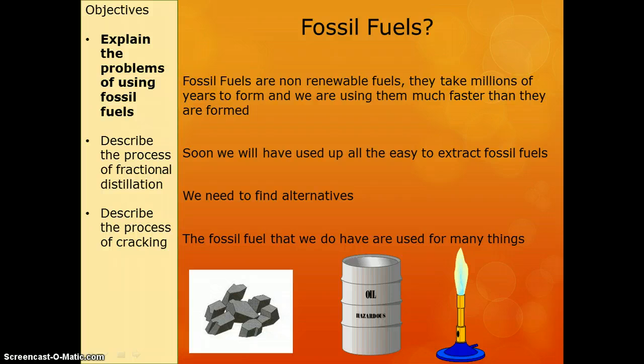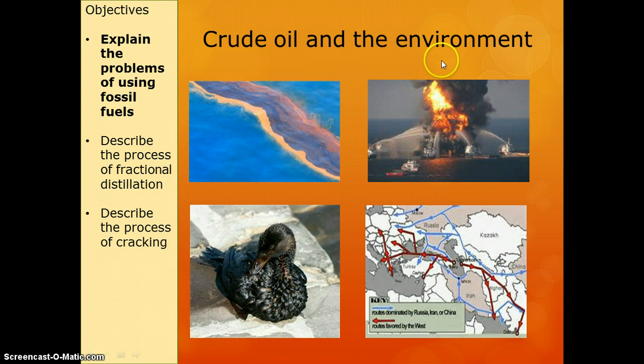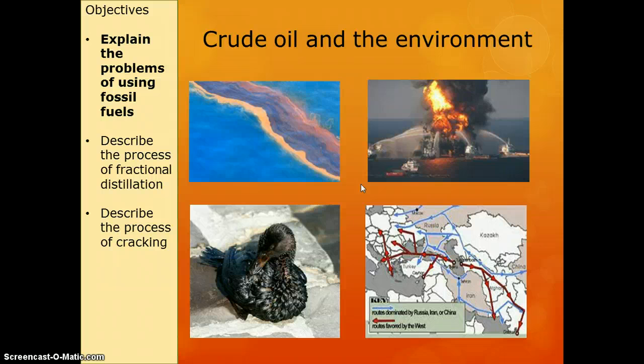There are problems with using crude oil beyond the fact that there's only a limited amount of it. The first one to look at is that extracting crude oil can be dangerous because it's highly flammable, it's not in easily accessible places, and it's quite difficult to get to. This is an example of an oil rig catching on fire.